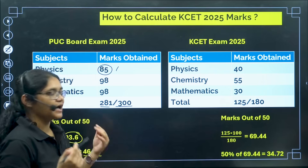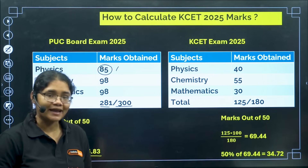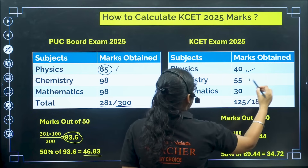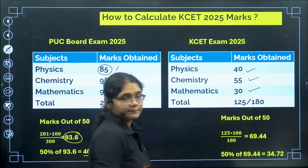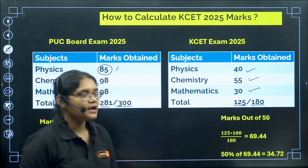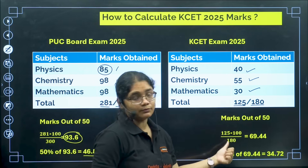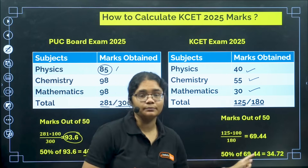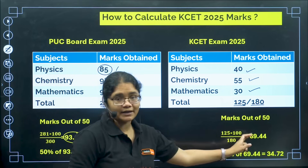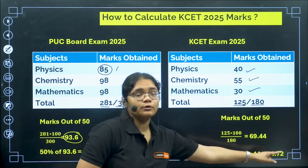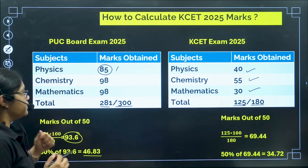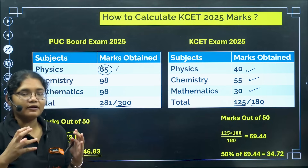Coming to the KSET 2025 examination, suppose you are getting 40 in Physics, 55 in Chemistry, and 30 in Mathematics. The total comes out to be 125 out of 180. The percentage here is 125 divided by 180 multiplied by 100, which comes out to be 69.44 percentage. Now if you take 50 percent of that — just divide by 2 — you will get 34.72 percentage.